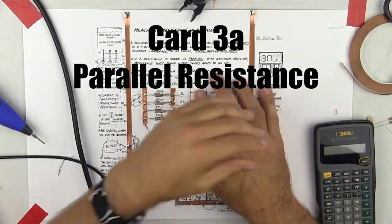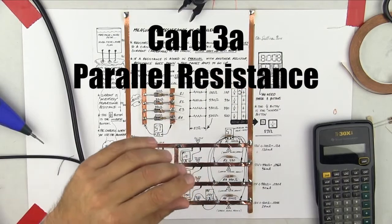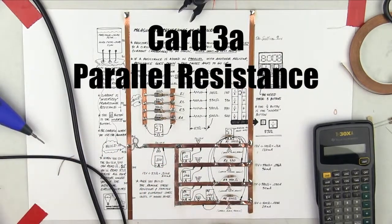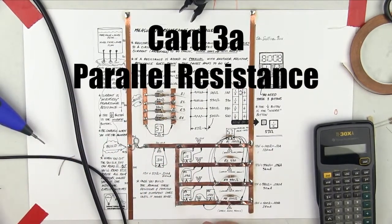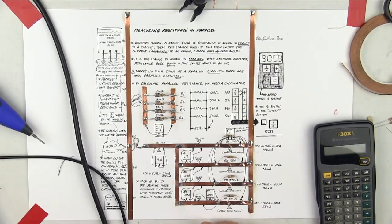Okay guys, this is Dan Sullivan, and this is card number three. Line numbers 300 to 310, measuring resistance in parallel.